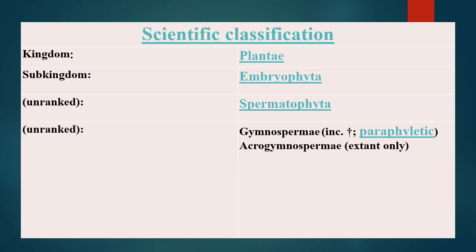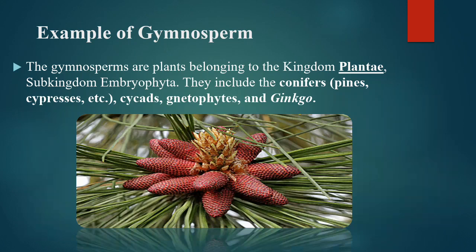Scientific classification: Kingdom Plantae, Sub-kingdom Embryophyta, unranked Spermatophyta and Gymnospermi. Examples of gymnosperms — plants belonging to the Kingdom Plantae, Sub-kingdom Embryophyta — include the conifers, cycads, gnetophytes, and ginkgo.